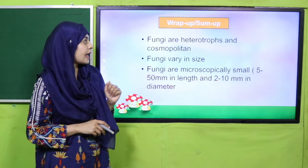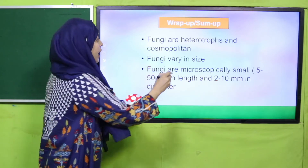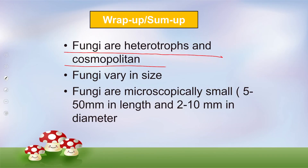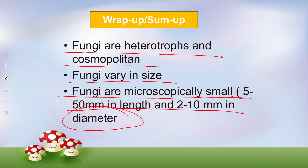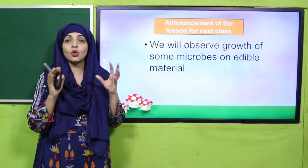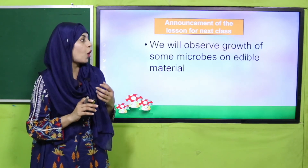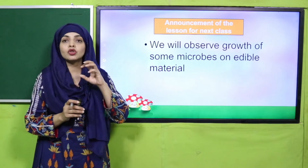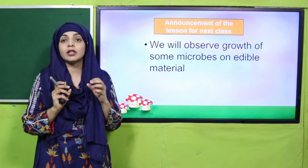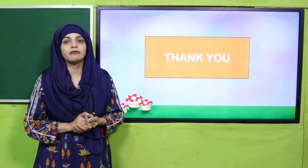My dear students, let's wrap up what we have learned today. Today we discussed another microbe — fungi. Fungi are heterotrophs and cosmopolitan in nature. Fungi vary in size; they are microscopically small and range from 5 to 50 mm in length and 2 to 10 mm in diameter. I hope you now know all three types of microorganisms: bacteria, virus, and fungi. In the next class we will observe the growth of some microbes on edible material through an experiment. Until then, keep everybody around you safe. Have a good day. Thank you so much. Allah Hafiz.